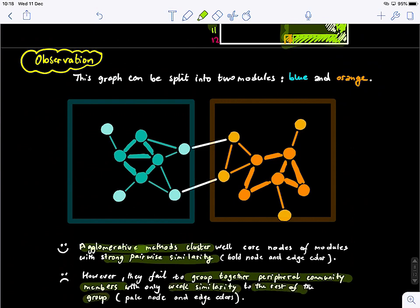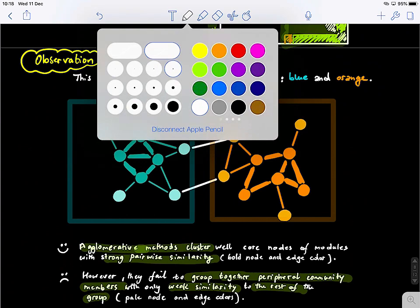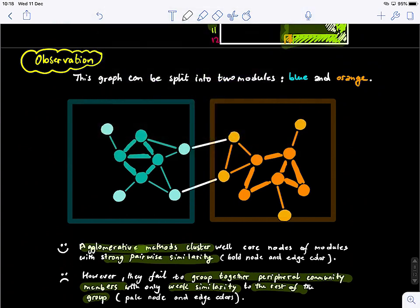These methods fail to group together peripheral community members with only weak similarity to the rest of a group. So for example, here, we can see that there is a core. Within a module, we learned about cores. So this is a core where there is a very strong connection between these nodes. And then there is another core here.